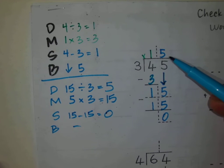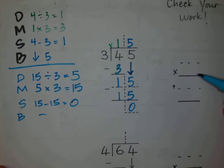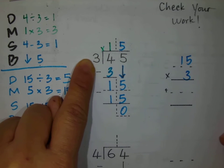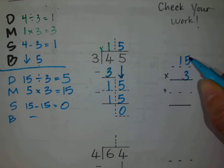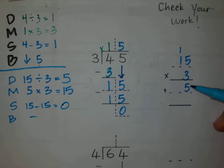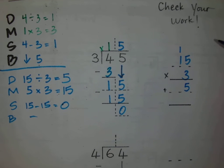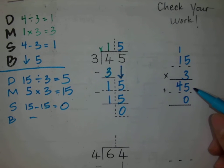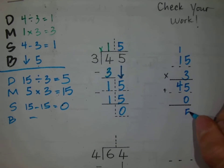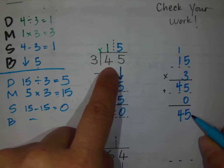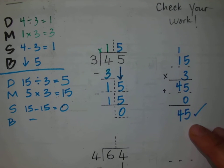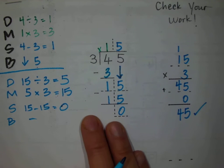Our quotient is 15. We do not have a remainder. Let's check our work. Let's take our quotient, 15, and multiply it with our divisor, which is 3. I'm going to use the standard algorithm here. 3 times 5 is 15 — carry the 1. 3 times 1 is 3, plus 1 is 4. Our remainder is 0. 45 plus 0 is 45. This is the same number as our dividend — check! That means this is correct. I have checked my work using multiplication and addition. My long division steps look correct.